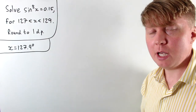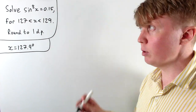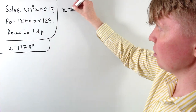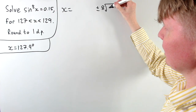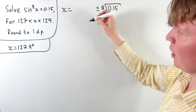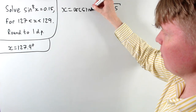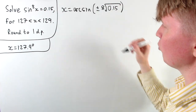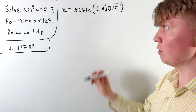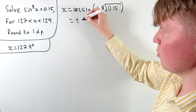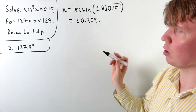Now we'll do the same but working in radians. Just like before, we solve to find that x is the arc sine of the positive or negative eighth root of 0.15 — writing arc sine rather than inverse sine to make clear we're working in radians. Calculating each of these roots, we get plus or minus around 0.909 as our two solutions.